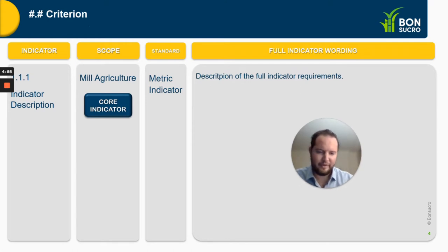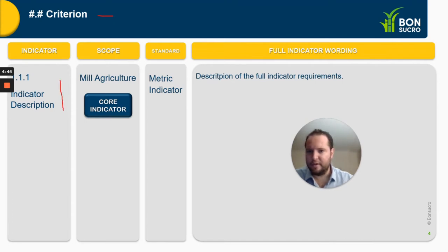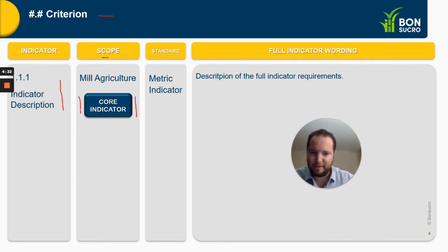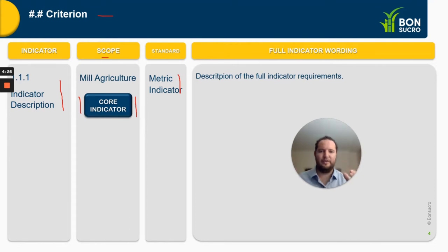In this slide, we will have information from the BornSucre Production Standard: the Criterion, the Indicator and the Indicator Description. Here the Scope — Mill, Agricultural, or the whole supply area — and whether it's a Core Indicator. We also have the Standard and the Metric Indicator, and a description of the full indicator requirements exactly as it is in the BornSucre Production Standard.